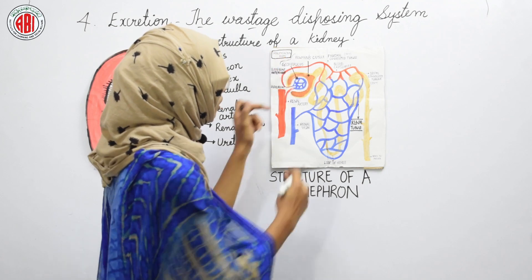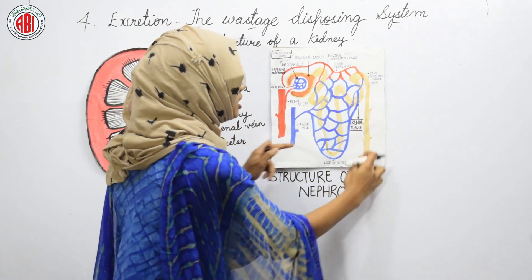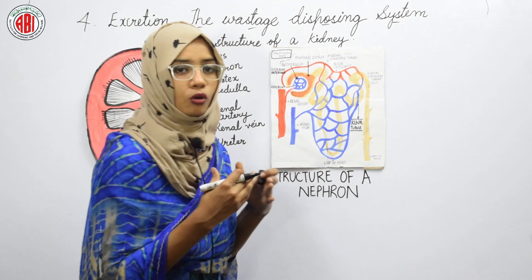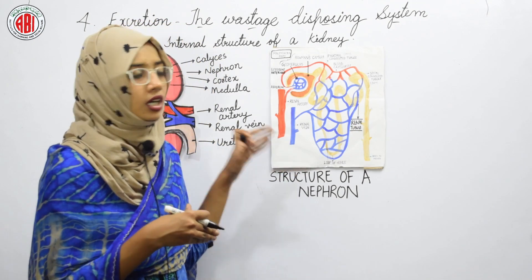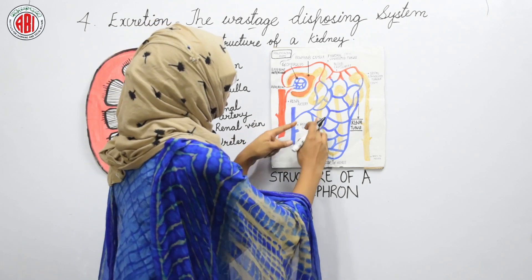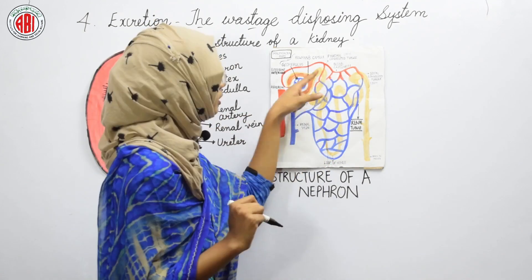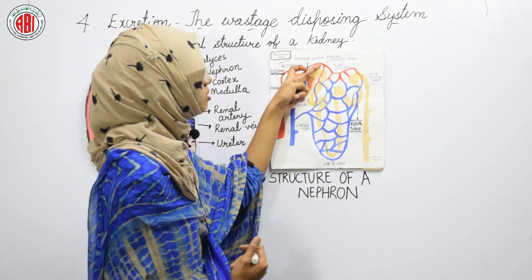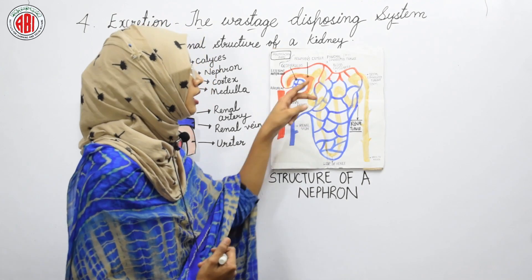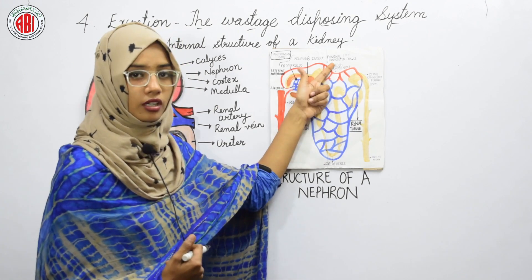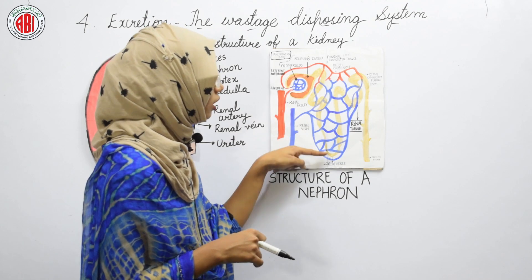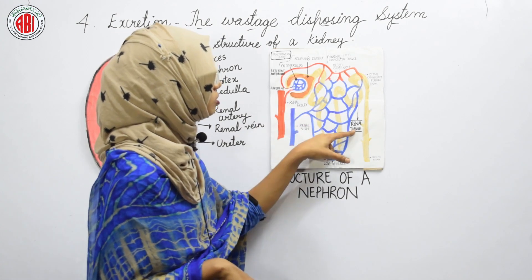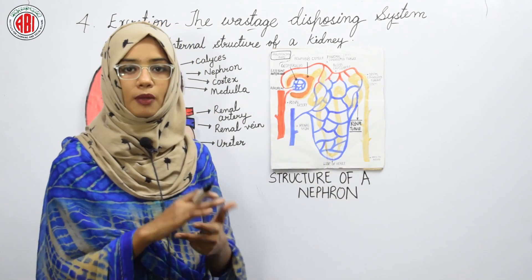After the Bowman's capsule, a coiled tube-like structure is present called the renal tubule. The renal tubule shows three major parts: the first is the proximal convoluted tubule, the next is the loop of Henle, and the third is the distal convoluted tubule. The proximal and distal convoluted tubules are connected through a loop called the loop of Henle. The renal tubule is open into the pelvis region.